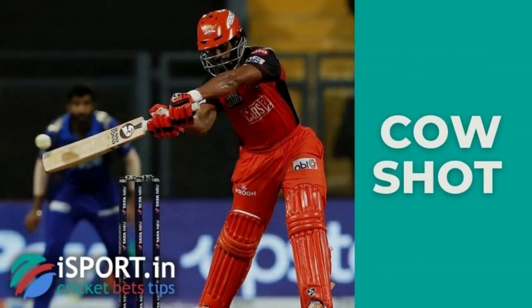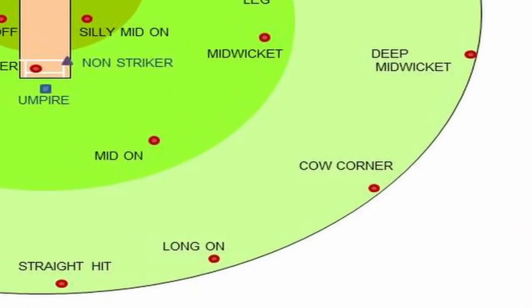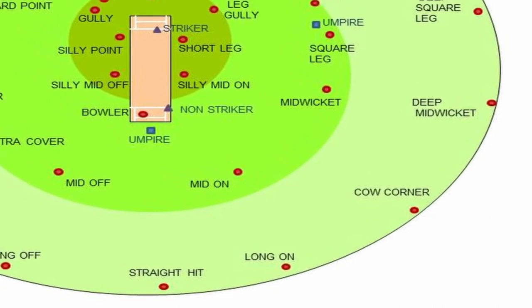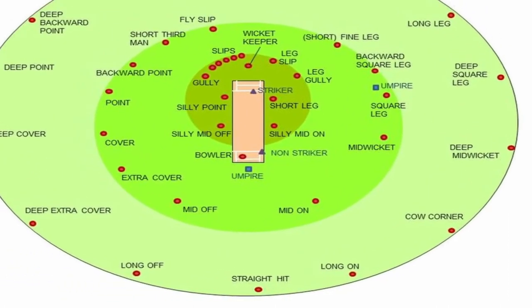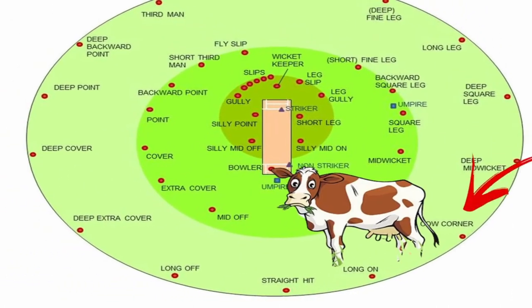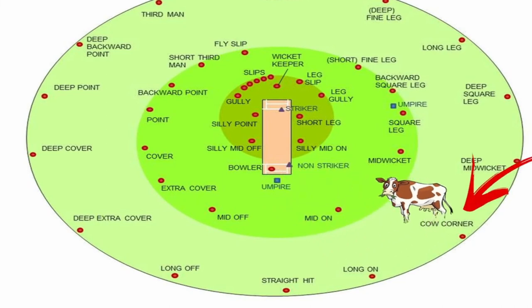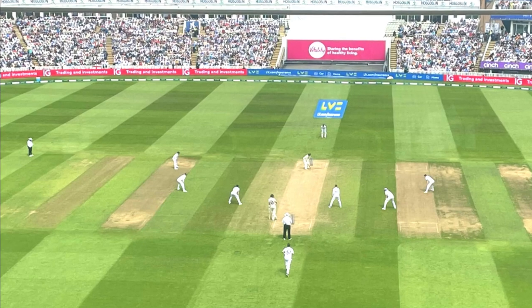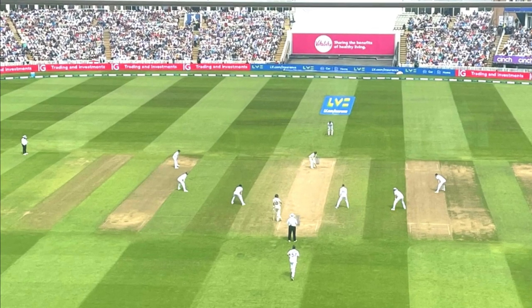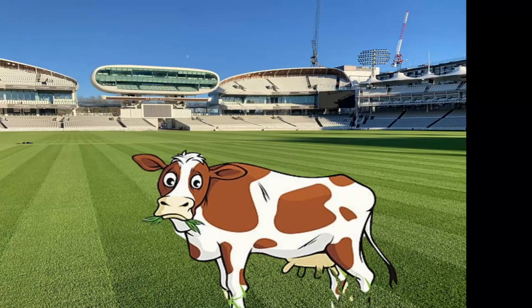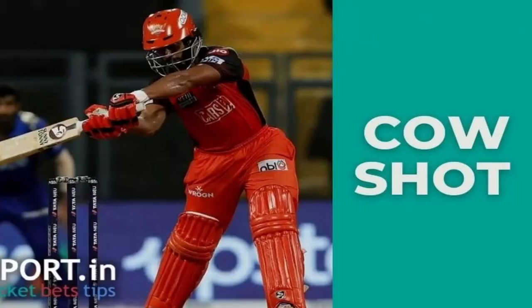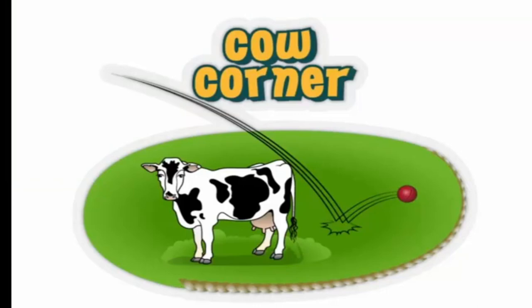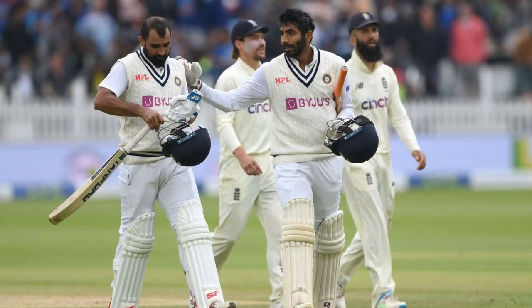Cricket has a cow shot and a cow corner. The term cow corner is used to describe the part of the field between deep mid-wicket and wide long-on. That name originates from the fact that fielders are rarely positioned in this corner of the field, so theoretically cows could graze there. Cow shot is a batting stroke used to hit the ball towards cow corner.